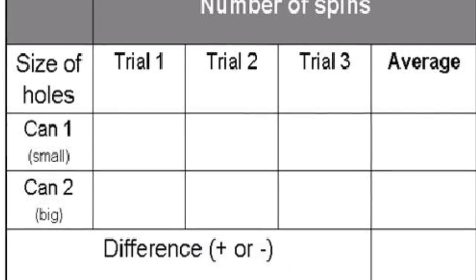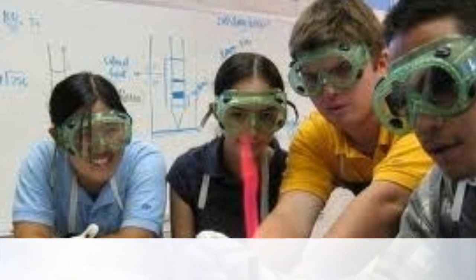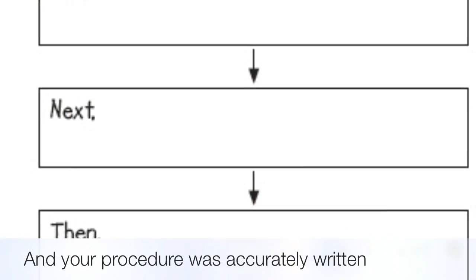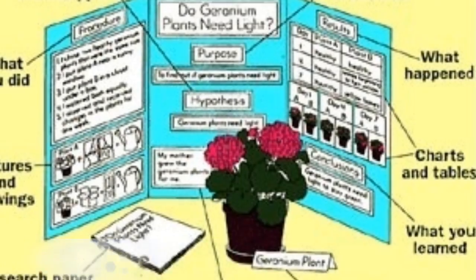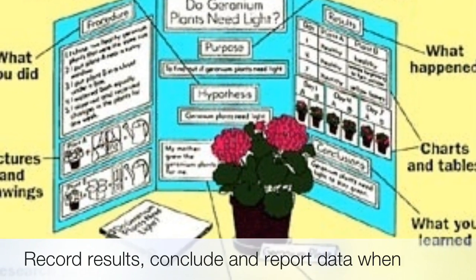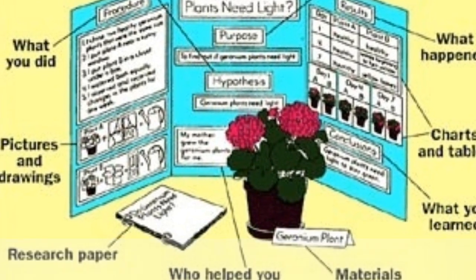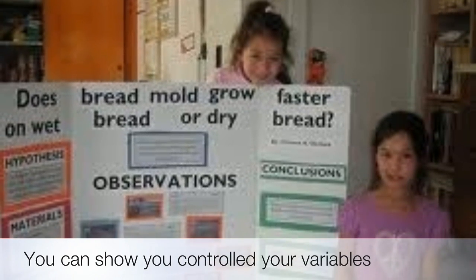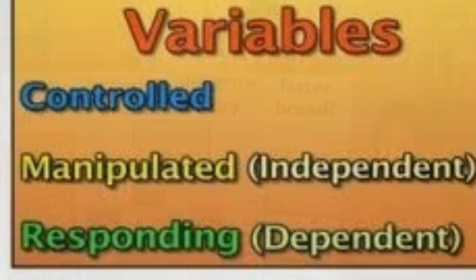You know all your variables. If you repeated your test again, and your procedure was accurately written, record results, conclude, and report data when you can show you control your variables.